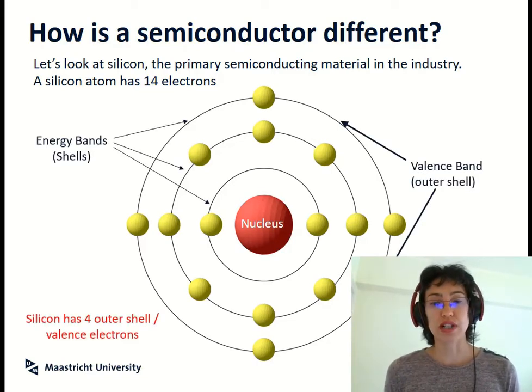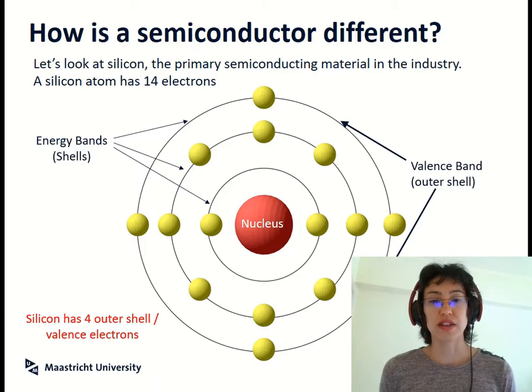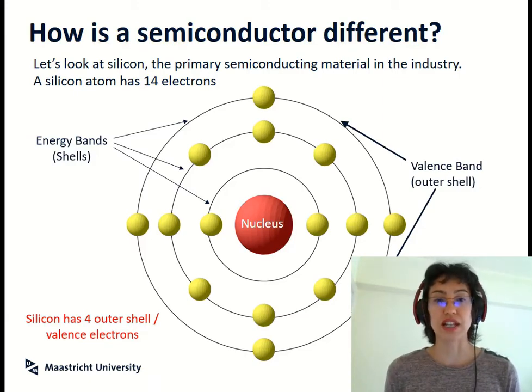These four outer electrons are known as the valence electrons, and this is known as the valence shell if you look at it in terms of its energy bands. This is only partially filled, so it's not completely full.